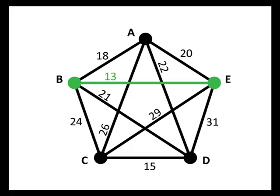From E, what's the lowest cost edge that wouldn't take us to a vertex we've already been to? In this case, that's the edge from E to A costing 20. Now we're at A, so we're looking for the lowest cost edge leaving A, but again we don't want to go back to any vertex we've already been to. So we're going to go from A down to D, following that edge that costs 22. The only vertex we haven't yet been to is C, so we'll go to C, and then finally we'll return to our starting point of B. So here's the nearest neighbor algorithm result if we start at B. When you're using the nearest neighbor algorithm, you want to be very careful to pay attention to the starting point.